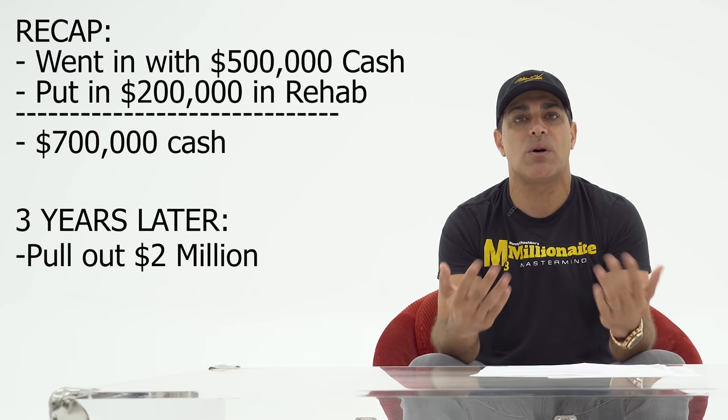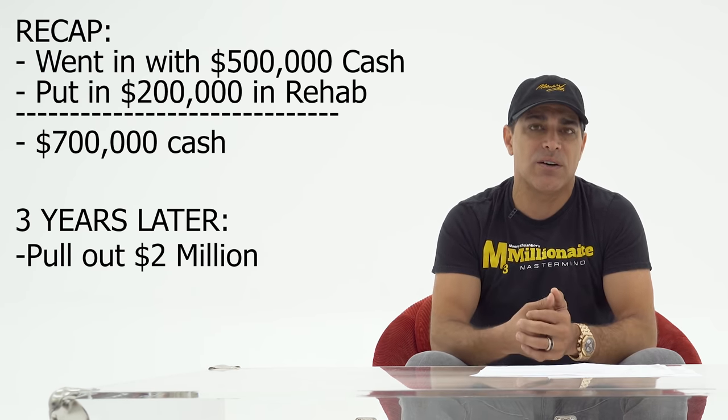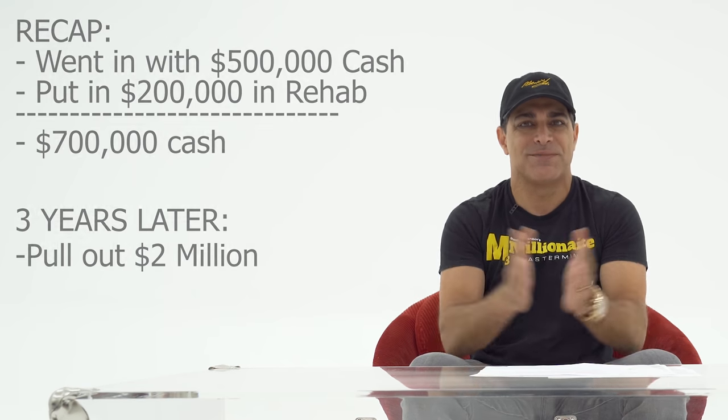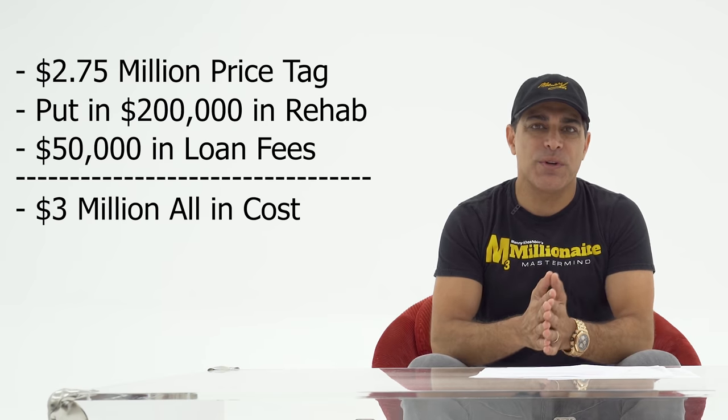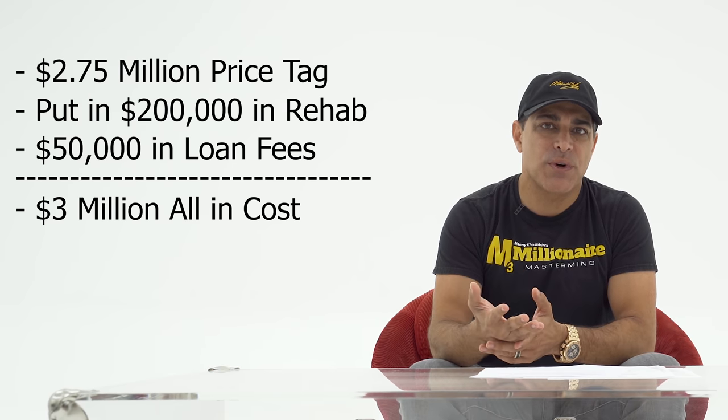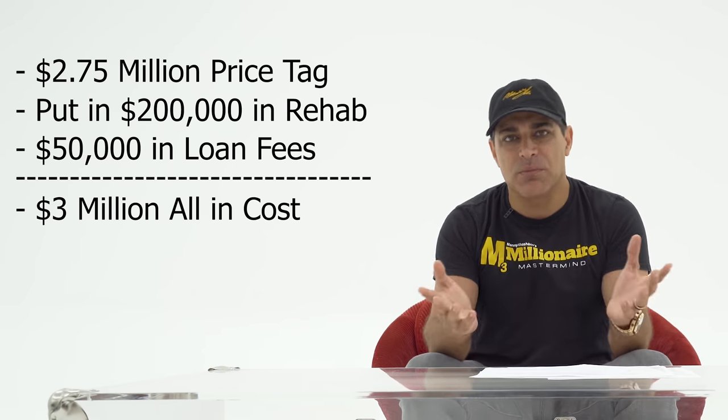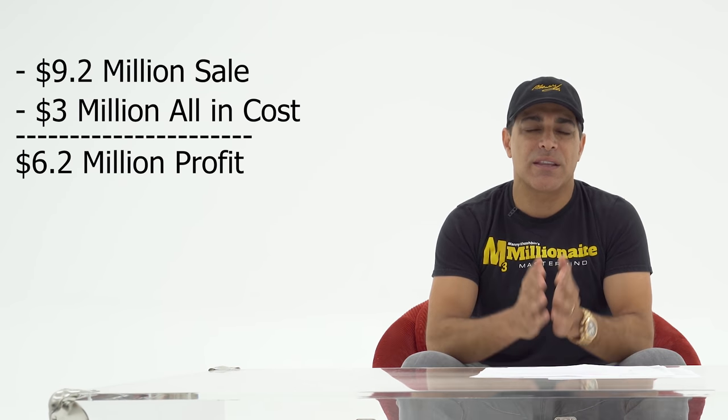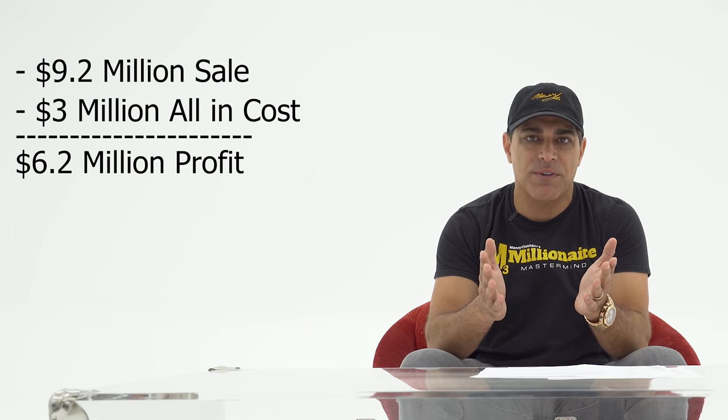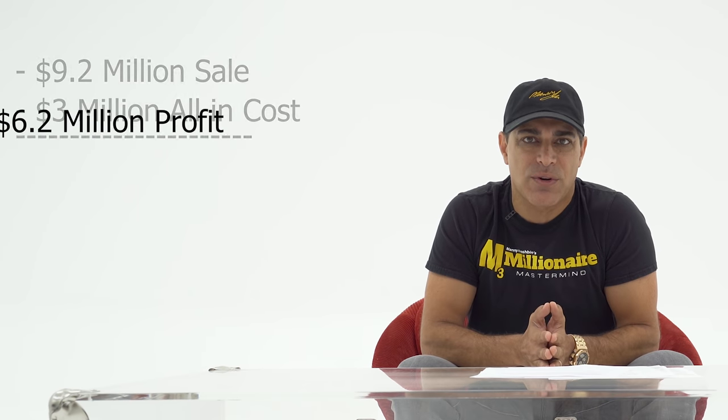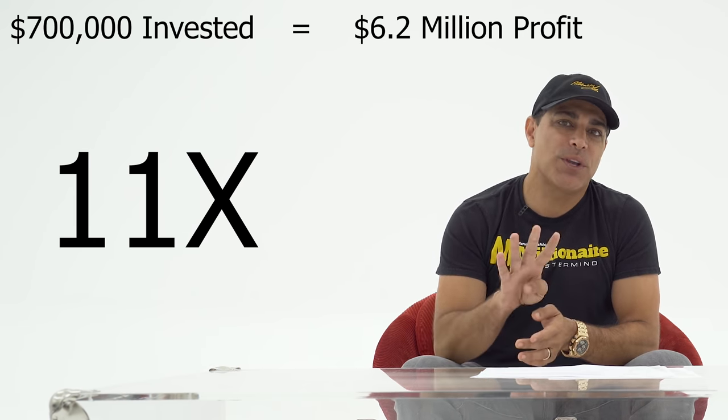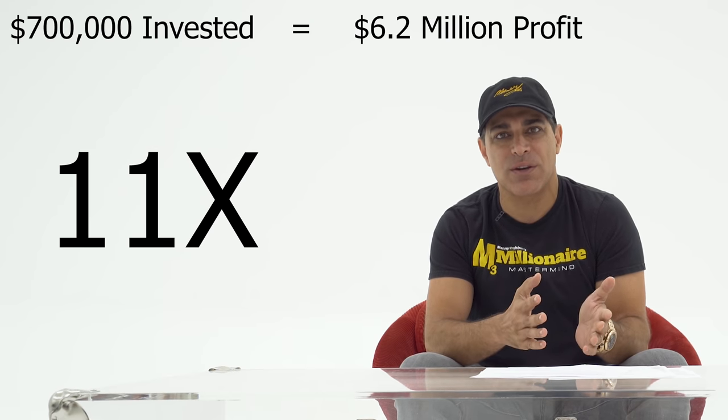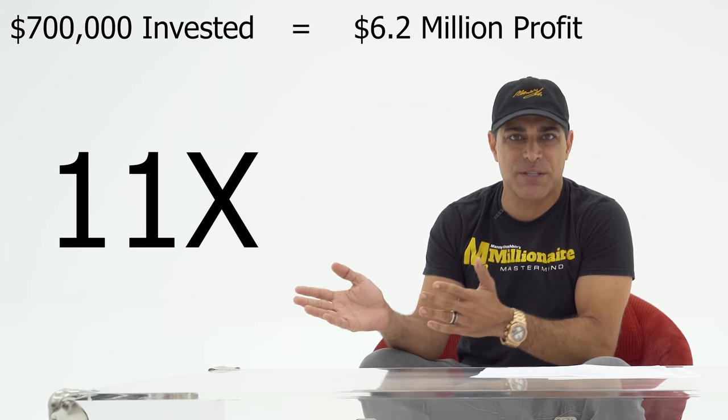That means I got all my money back and then some. And now I'm playing with the bank's money, just like casino. So I'm in it for a little over $3 million. That's $2.75 million plus my $200,000 I put in for rehab plus some loan fees. And I was able to sell it for $9.2 million. That netted me over $6 million profit on a $700,000 investment. In just four years, I was able to take $700,000 and make it into $6 million.